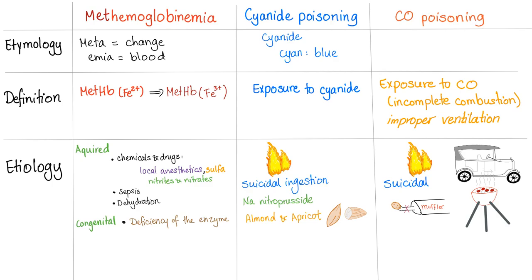Just reading with your eyes is a terrible idea to retain information, because repetition is the mother of pedagogy. Let's start by the etymology — the science of words. 'Meta' means change, 'emia' means blood, hemoglobin is the hemoglobin. 'Cyanide' comes from the word 'cyan,' which means blue — that's why cyanosis means blue. We call cyanide blue because it came from Prussian blue.